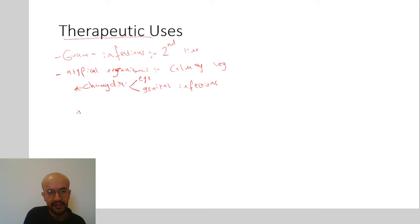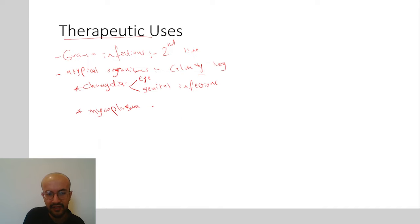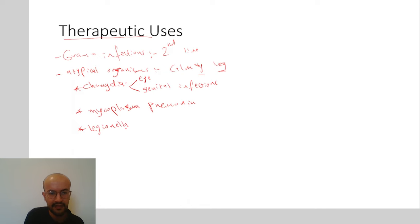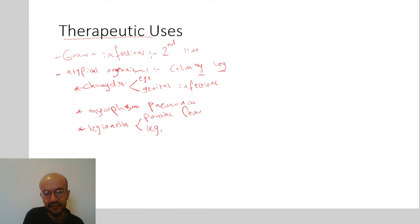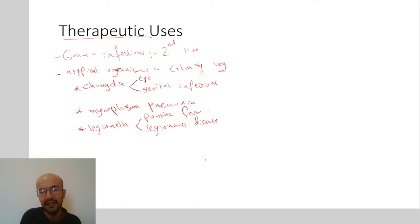Mycoplasma causes atypical pneumonia called mycoplasma pneumonia, and it is also treated with macrolides. Legionella causes Pontiac fever (mild) and Legionnaires' disease (severe) — both respiratory illnesses — and macrolides work well for Legionella infection too.